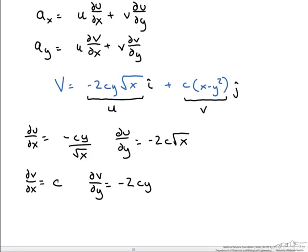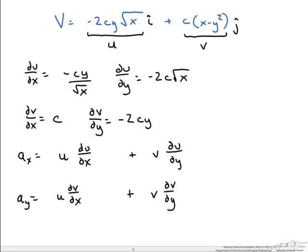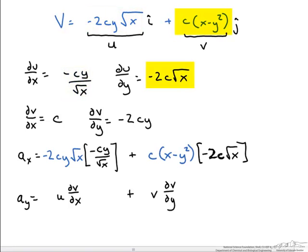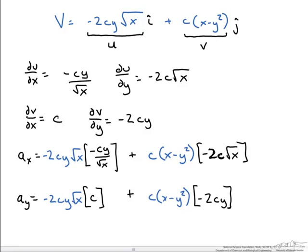We also compute the partial derivatives of v with respect to x and y. Then we plug these four equations back into our acceleration expressions with the u and v terms and begin simplifying. Taking u times du/dx and v times du/dy gives us our x component, and similarly for the y component.